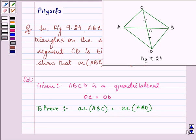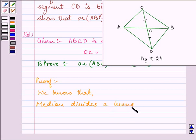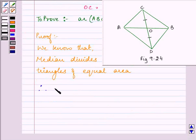Now, since we know that median divides a triangle into triangles of equal area. So, area of CAO is equal to area of AOD. Let this be the first point.